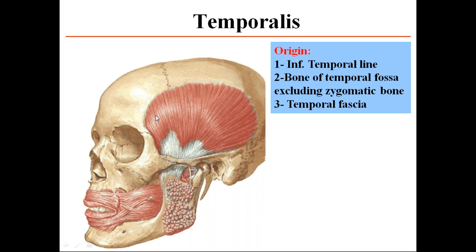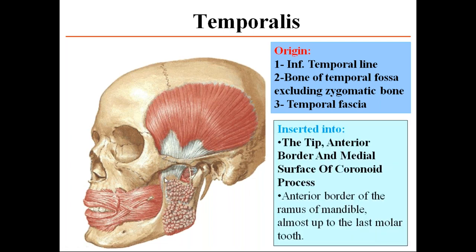The temporalis has three types of fibers based on orientation: anterior fibers oriented vertically downward, middle fibers oriented obliquely, and posterior fibers oriented horizontally — forming a fan-shaped structure. The lower part is tendinous and inserts into the tip, anterior border, and medial surface of the coronoid process. This insertion extends into the anterior border of the ramus of the mandible up to the last molar teeth.